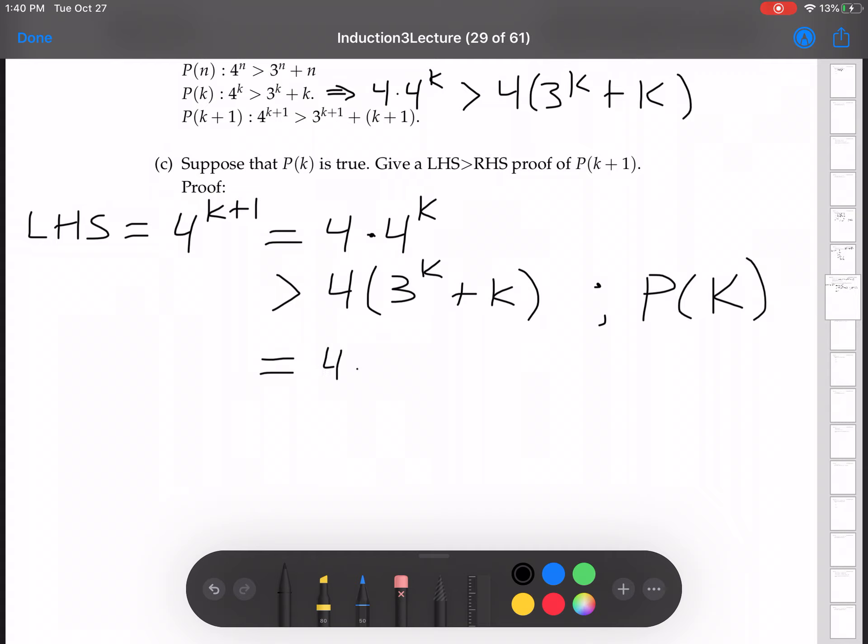Now distributing that through, we got 4 times 3 to the k plus 4k. Now this is going to be bigger than 3 to the k plus 1 plus k plus 1. This is equal to the right-hand side.